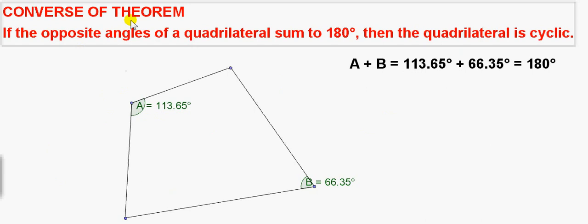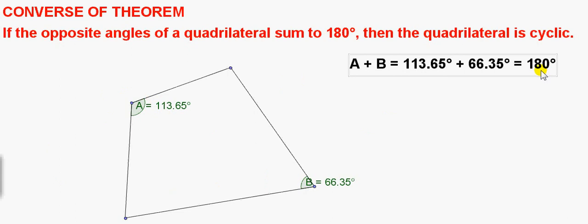Here's the converse of the cyclic quadrilateral theorem. If the opposite angles of a quadrilateral sum to 180 degrees, as they do for this particular quadrilateral, if A plus B equals 180 degrees, then we can conclude that this quadrilateral is a cyclic quadrilateral. So we can circumscribe a circle about this quadrilateral.